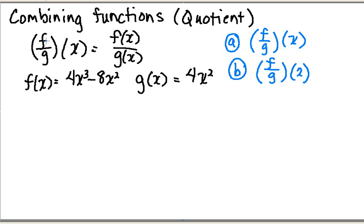So the way we denote that is f over g of x, or f divided by g of x, is equal to f of x divided by g of x. And you have to have f of x and g of x defined in your original problem.